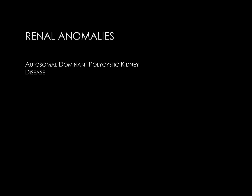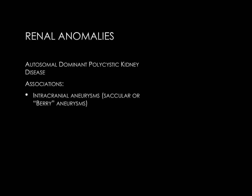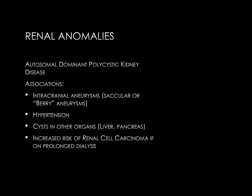Autosomal dominant polycystic kidney disease has several noteworthy associations. One of the most classic is intracranial aneurysms — specifically saccular or berry aneurysms, which have a higher risk of rupture. Several guidelines suggest brain imaging with a new diagnosis. Additionally, the disease is associated with hypertension and cysts in other organs such as the liver or pancreas. It was previously thought to carry a higher risk of renal cell carcinoma, but this is now attributed to prolonged dialysis. These patients undergo surveillance imaging for solid or indeterminate renal lesions, which is a difficult task given the size and complexity of their kidneys.